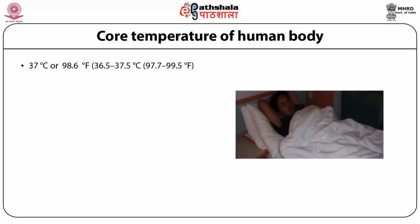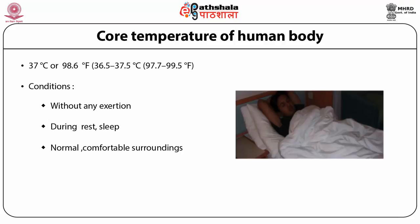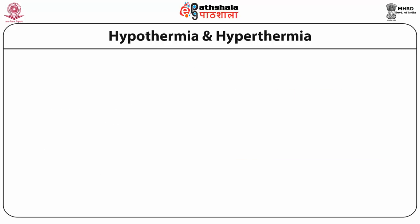The core body temperature of 37°C is observed under conditions where the body is in a comfortable position with no exertion or activity — for example, sleeping or resting. During this time, the metabolic rate is normal. The person also needs to be in a healthy state. These are the conditions under which the core temperature is at 37°C.